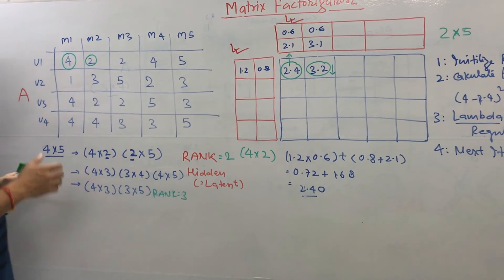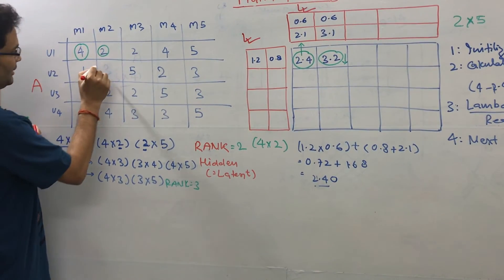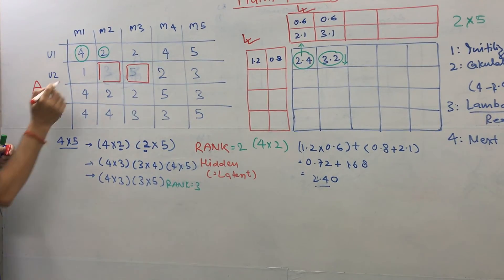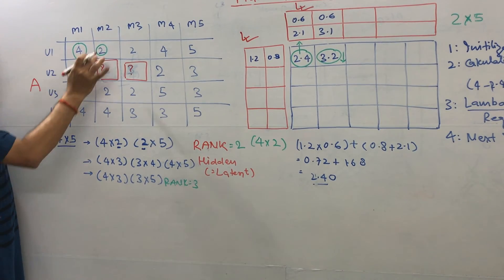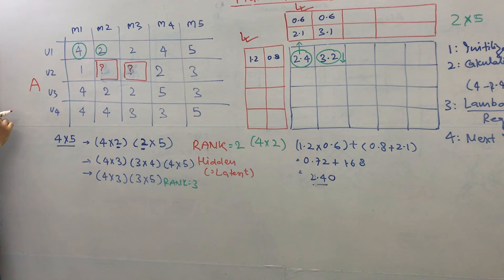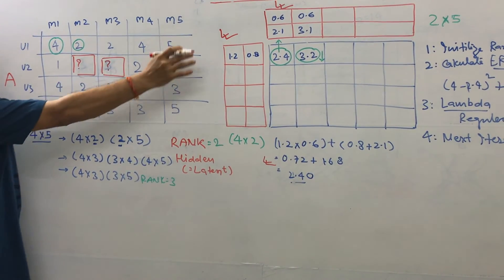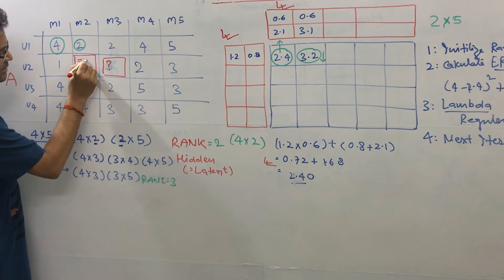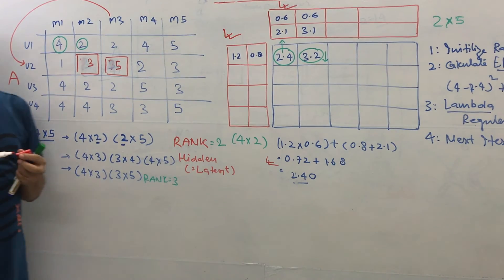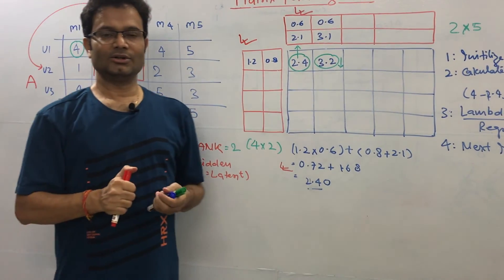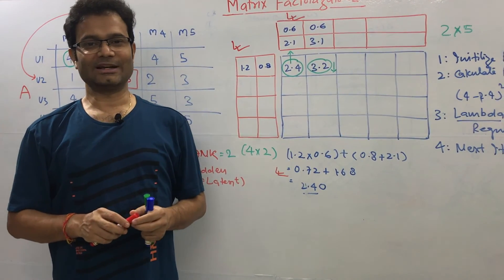What is the use of this? Suppose for user U2, we have not got certain data — some cells are empty — and we need to recommend whether we should suggest movie M2 or M3. Using the factorized matrices, we can calculate the matrix and get the data. If our sub-matrices are well trained, we will get approximately 3 for M2 and approximately 5 for M3. On that basis, we recommend movie M3 to user 2. This is how matrix factorization works.